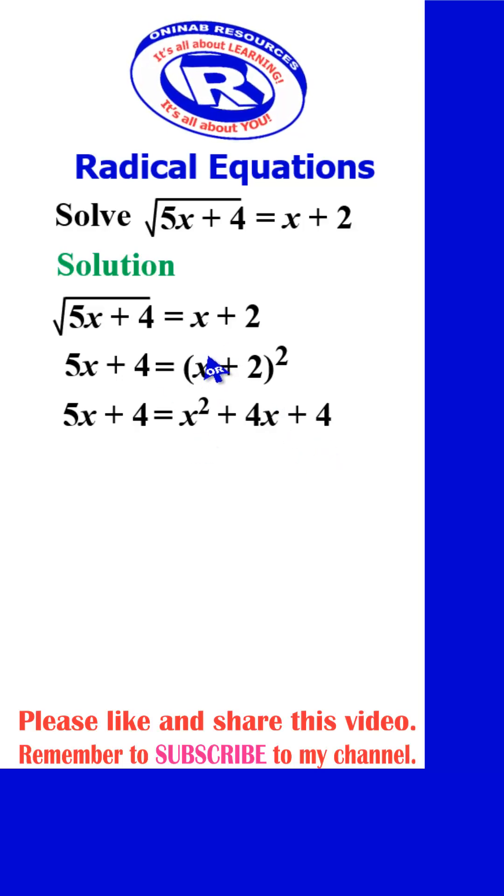How do we do that? Square this, we have x squared. Multiply x by 2, we have 2x. Then you always multiply by 2 to get the middle term. Then square this to give us 4.